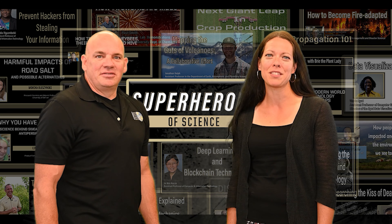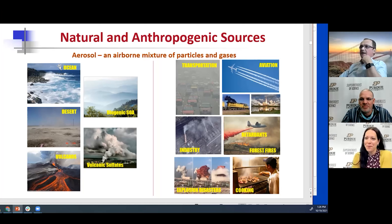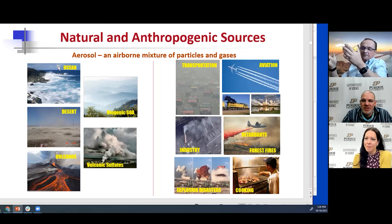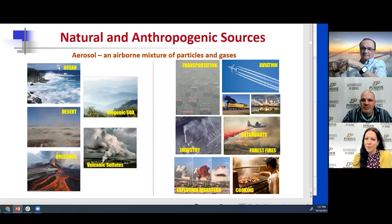Talking about the sources of atmospheric aerosols — basically, atmospheric aerosols are tiny particles so small that they can float in the air. We're quite familiar with the fact that our atmosphere is composed of different gases, but these tiny particles are also a very inherent part of the atmosphere.